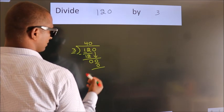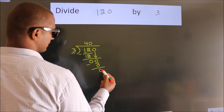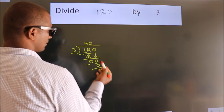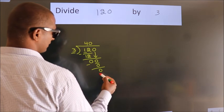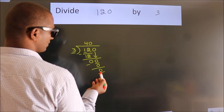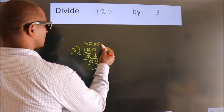Now we subtract, we get 0. After this, no more numbers to bring it down and we got remainder 0. So this is our quotient.